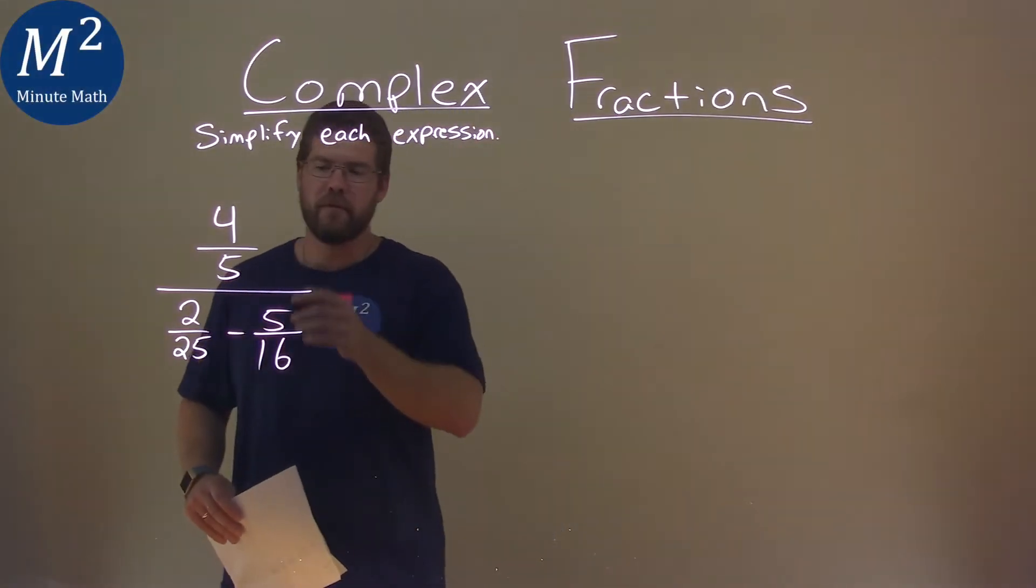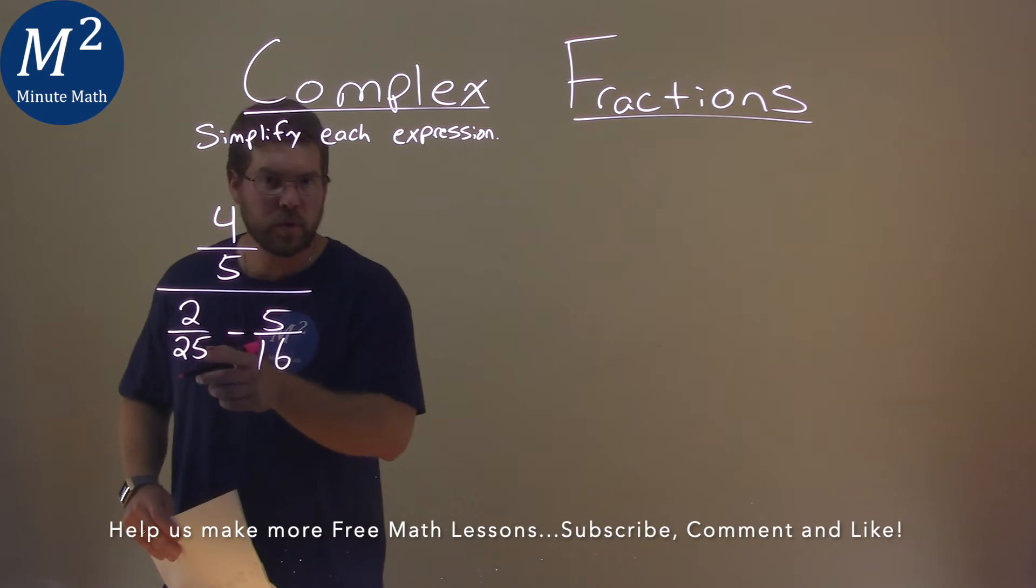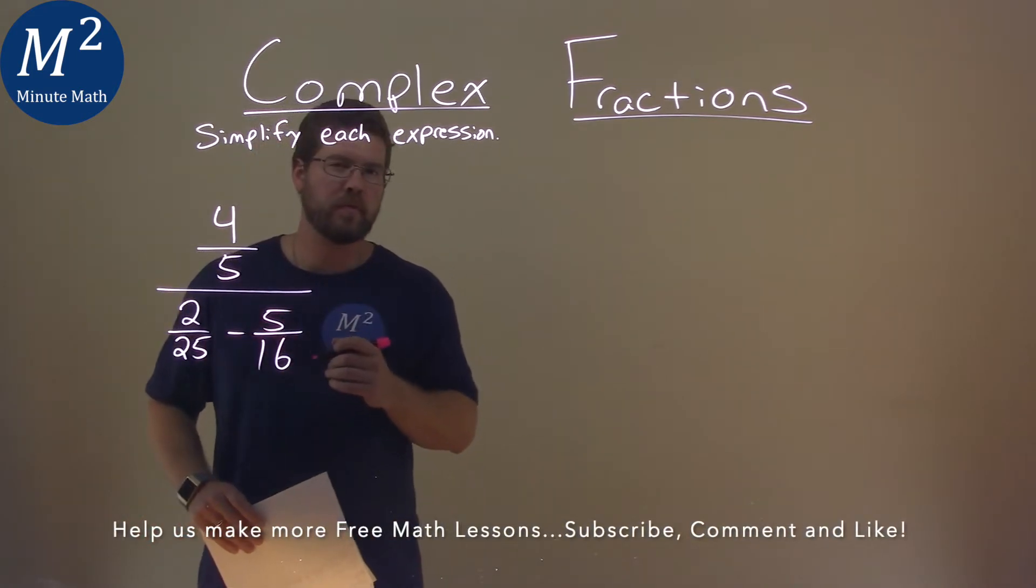We're given this problem right here, 4 fifths over 2 over 25 minus 5 over 16, and we just simplify this expression.